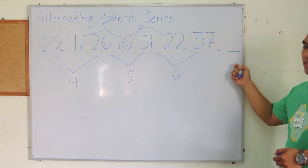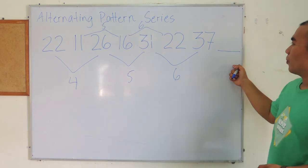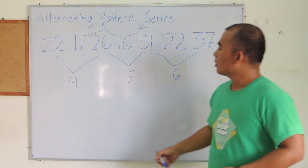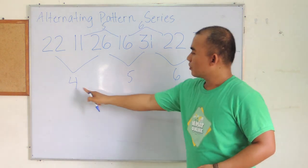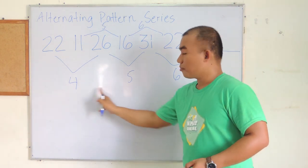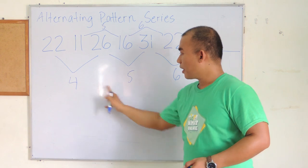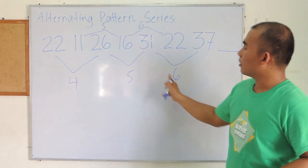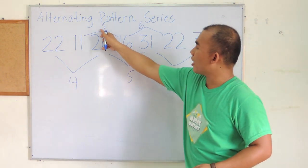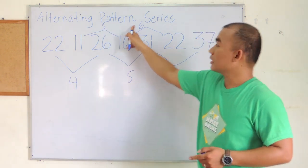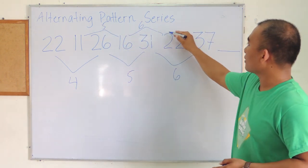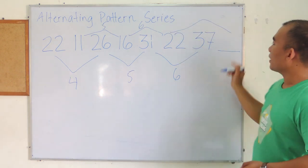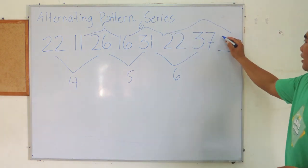To determine the answer, we get a pattern from the differences below: 4, 5, 6 — and correspondingly 5, 6, then 7. So we apply plus 7, and 22 plus 7 equals 29.